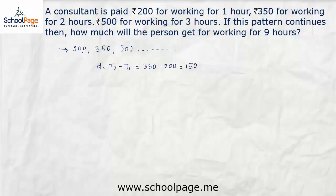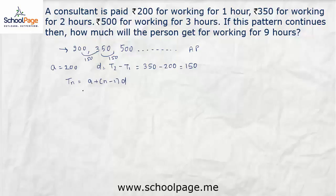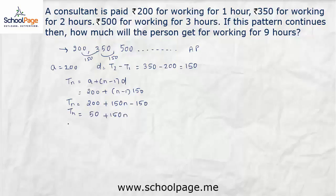Using the formula tn equals a plus (n minus 1) times d, and substituting a equals 200 and d equals 150, we get tn equals 200 plus (n minus 1) into 150. Expanding: tn equals 200 plus 150n minus 150, which simplifies to tn equals 50 plus 150n.